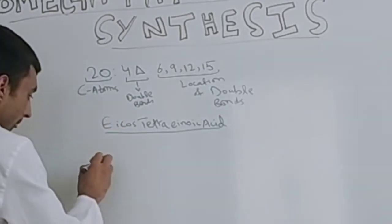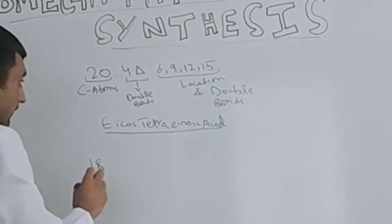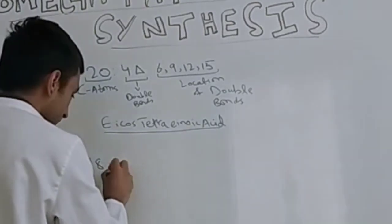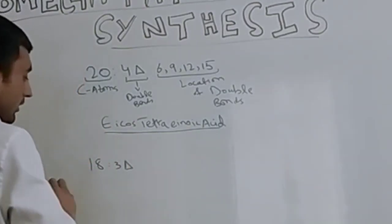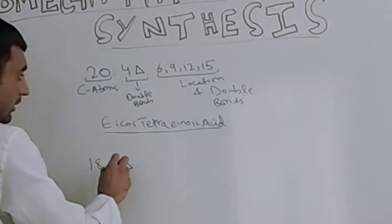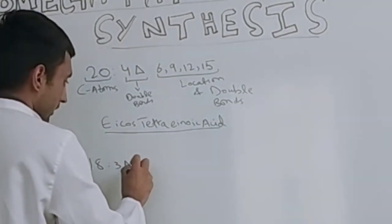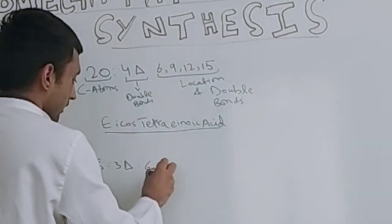Now there is one more example here: 18:3, eighteen carbon atoms, three double bonds, and then location would be 6, 9, and 12.